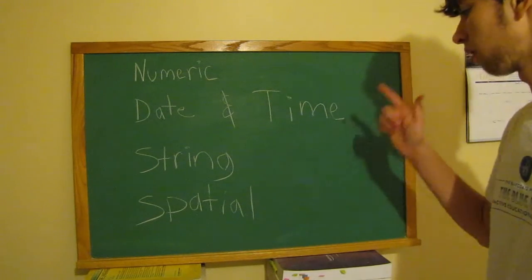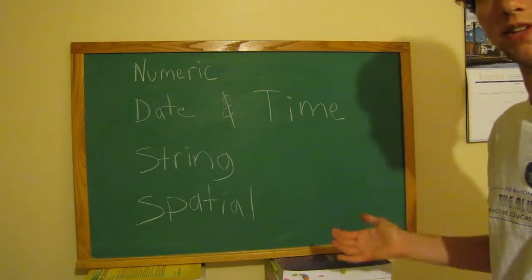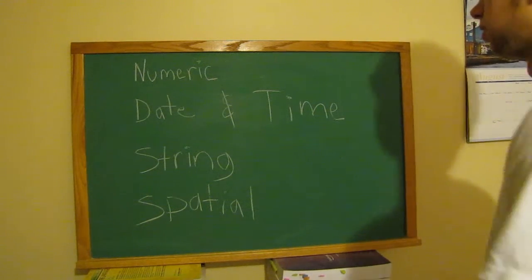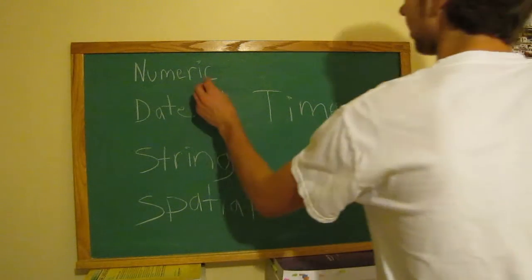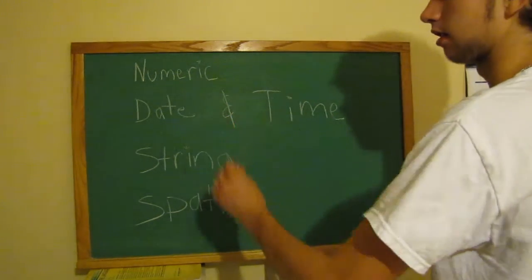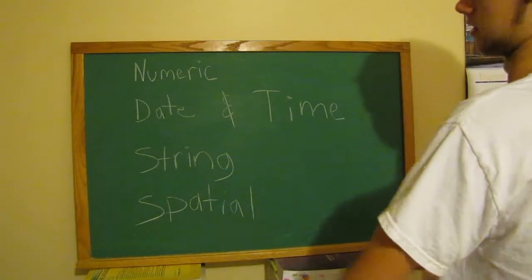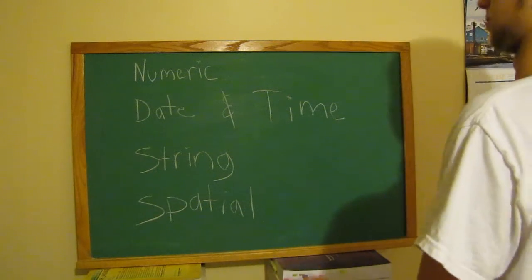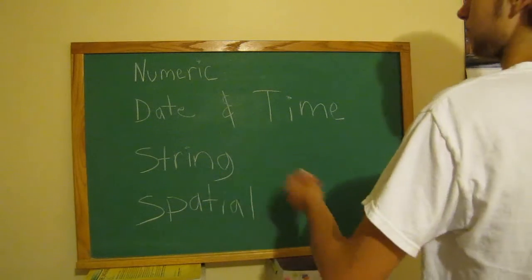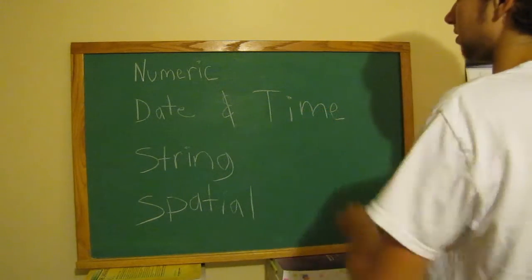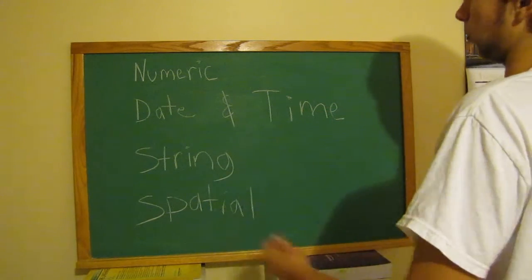Here are the four types of datatypes. Numeric - that would be any type of number, like 67.3. Date/time - that's pretty simple, just a date and time, or time.